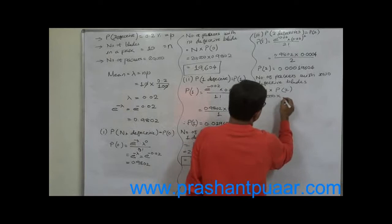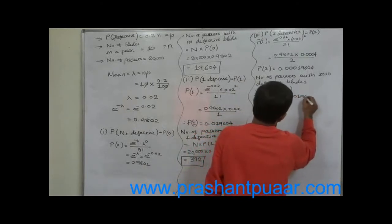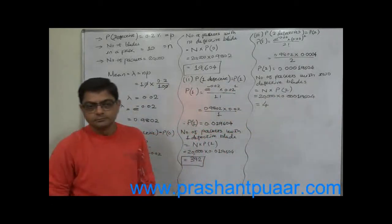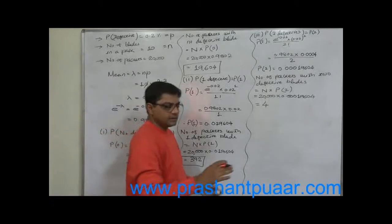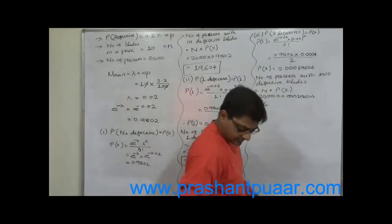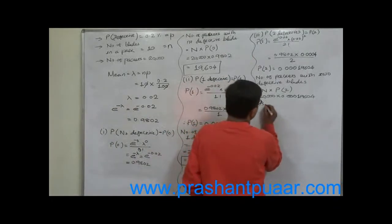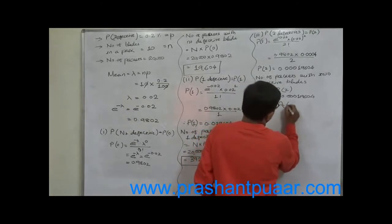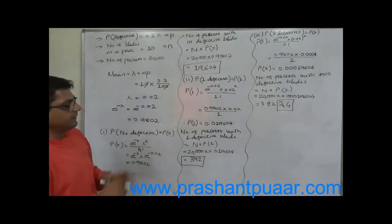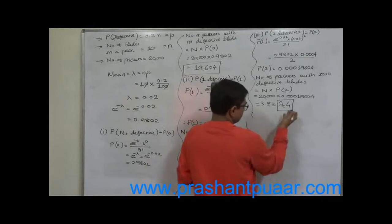Number of packets with 2 defective blades equals total number of packets into P(2): 20,000 × 0.00019604 = 3.92, which rounds to approximately 4. So only 4 packets out of 20,000 can be expected to have two defective blades.